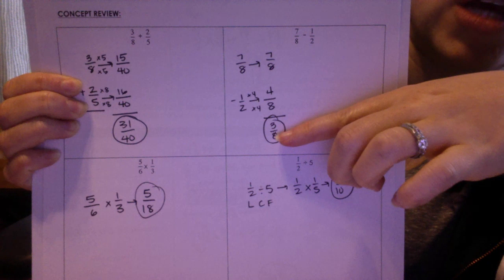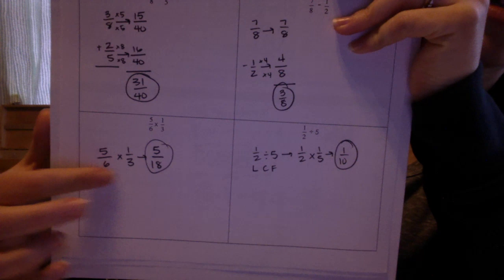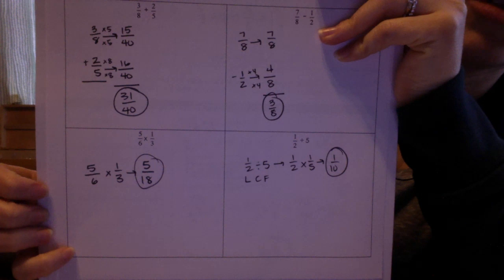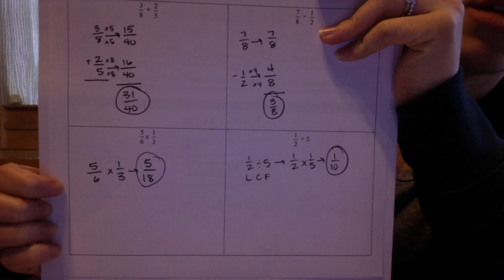Multiplication with fractions is super simple, but notice it's written horizontally rather than vertically because in this, you don't have to worry about common denominators. All you have to do is multiply straight across. So 5 times 1 is 5, 6 times 3 is 18. So 5 sixths times 1 third is 5 eighteenths.